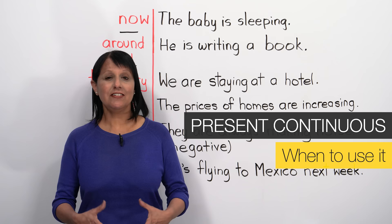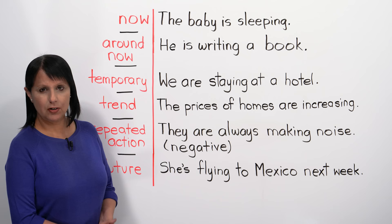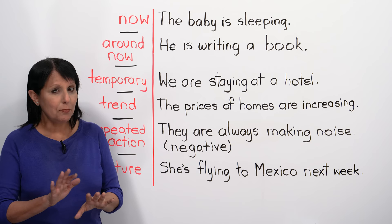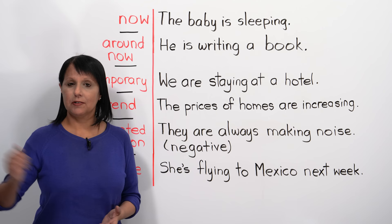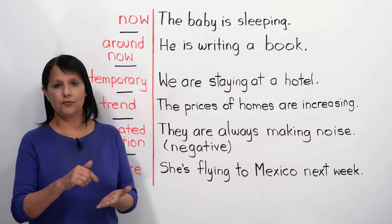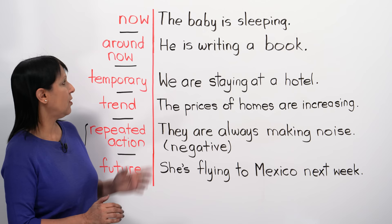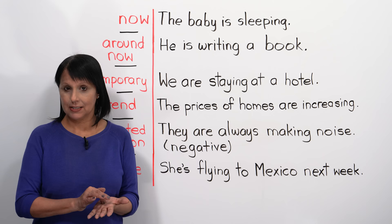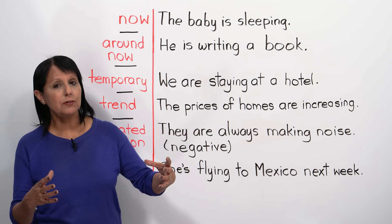Now let's look at when we use the present continuous tense. As we saw earlier, we can use it to talk about something that's happening right now — for example, 'The baby is sleeping, don't make noise,' or 'It's raining outside.' We can also use this tense to talk about something that's happening around now. For example, 'He is writing a book' — he might not be writing it this very minute, but he's writing it around now.